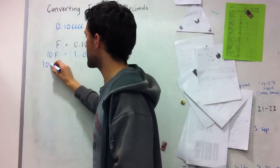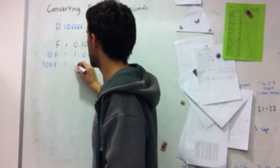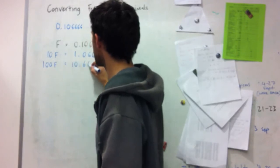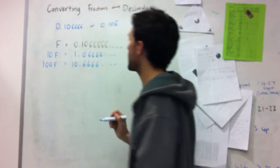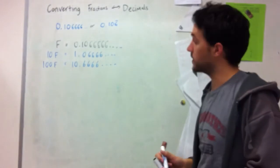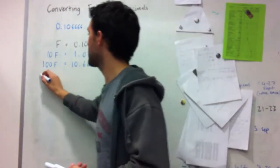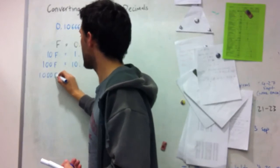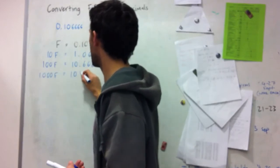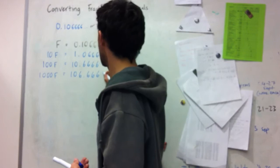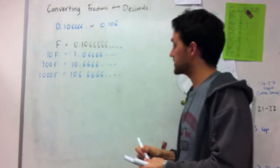So I can keep on multiplying by 10. Now I get 10.6666. So I still don't have two decimals that have the same decimal part. But when I go to 1000f, now I have these two decimals.